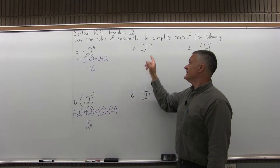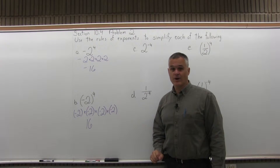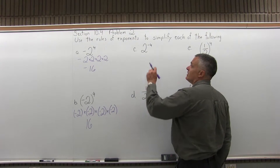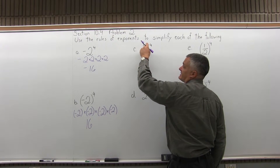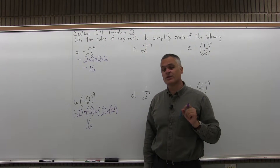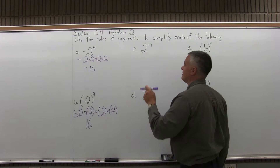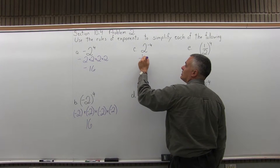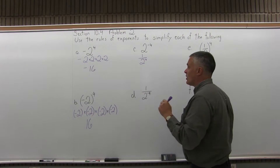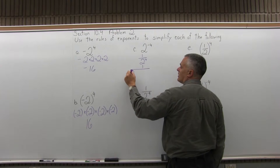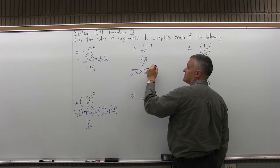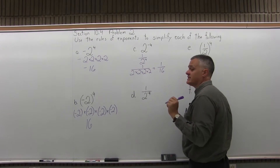Part C is 2 to the negative fourth power. The rule for negative exponents says if you have something to a negative exponent, it tells you whether the exponent occurs in the numerator or denominator. This is really 1 over 2 to the positive 4, which is 1 over 2 times itself 4 times: 1 over 16, or one sixteenth.